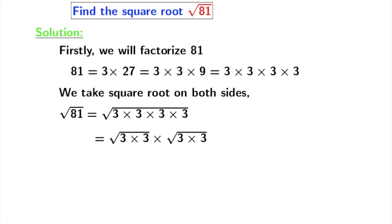Now using grouping we get square root of 3 times 3 times square root of 3 times 3. Here we have used this rule that square root of x times y is equal to square root of x times square root of y.